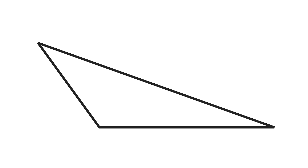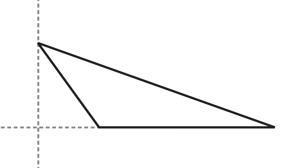One thing we can do is extend some of the sides of this obtuse triangle — specifically this side here on the obtuse angle. So if we extend that side and then draw in another line that intersects this top point and also intersects the extended side at a right angle, what have we done here? Now if we look at this whole shape we've created — three straight sides enclosing an area with one right angle. That's a right triangle!